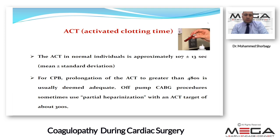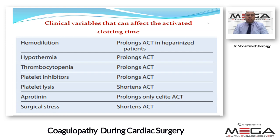Clinical variables that can affect ACT include hemodilution, hypothermia, and thrombocytopenia. Aprotinin was removed from the market 10 years ago. Hemodilution and hypothermia may cause false prolongation of ACT, which must be considered when interpreting results.